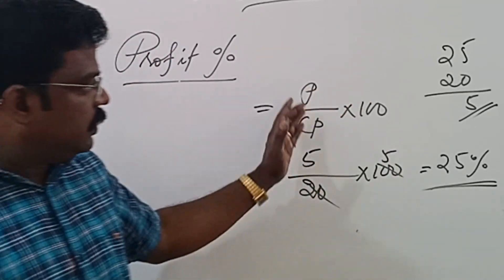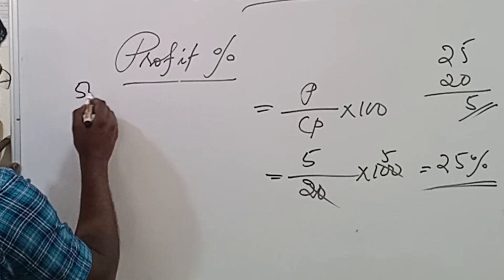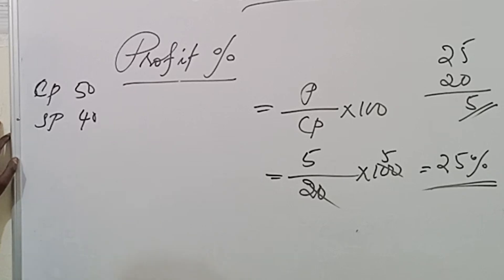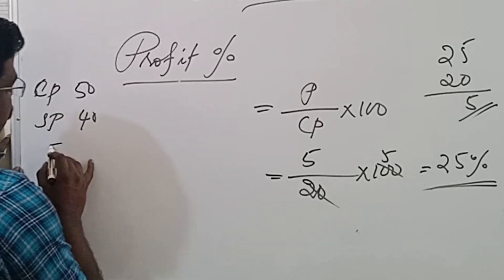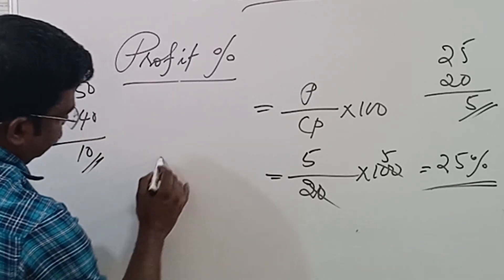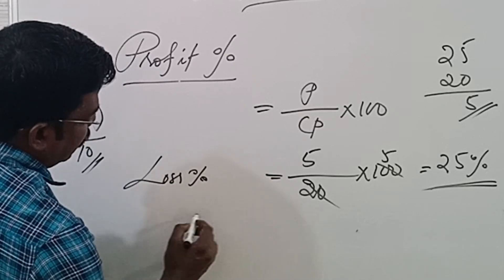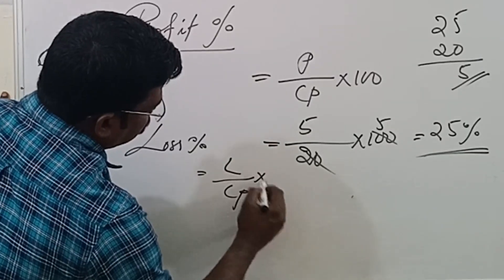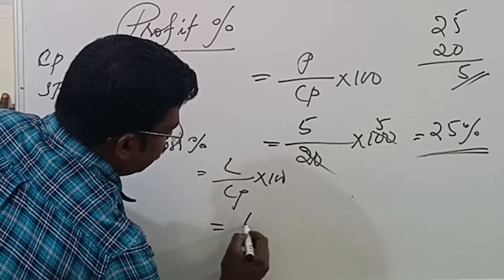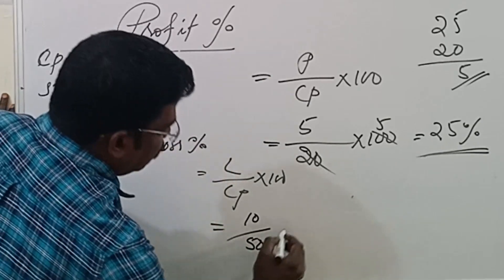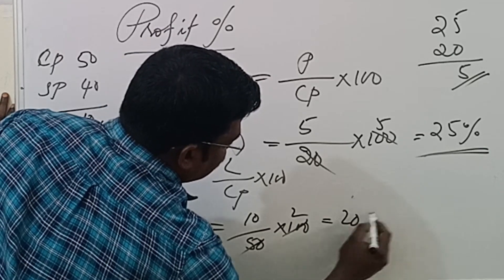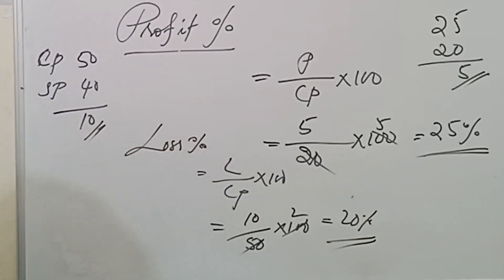In the second case, cost price was Rs.50 and selling price was Rs.40, so there was a loss of Rs.10. Loss percentage equals loss divided by cost price into 100. Here, loss is Rs.10 and cost price is Rs.50, so loss percentage equals 10 divided by 50 into 100, which equals 20%.